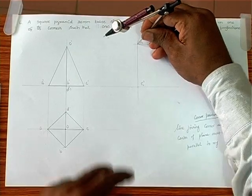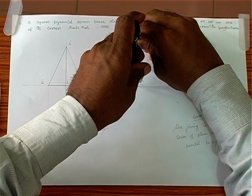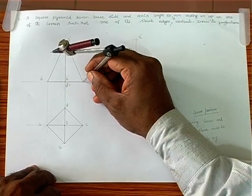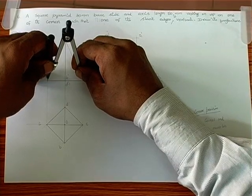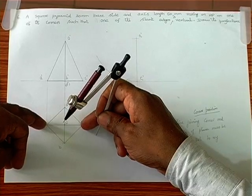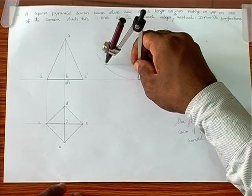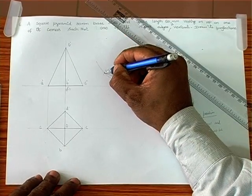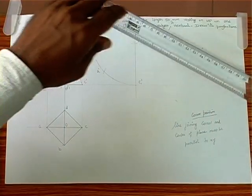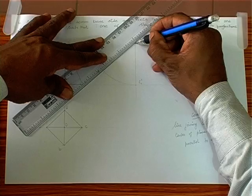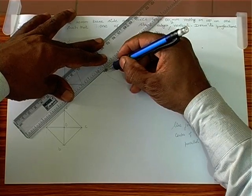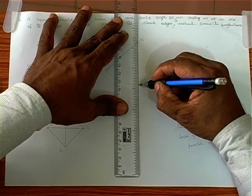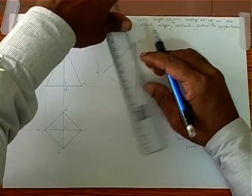Now we reproduce the isosceles triangle here — that is very simple. We take this arc, take this arc, and take this arc, then take the base distances — the across-the-corner distance. This distance is marked here. When we join this, we get point A, so this intersection is A1-dash. We connect A1-dash and O1-dash. In the new position, one of the slant edges OC is kept strictly vertical.